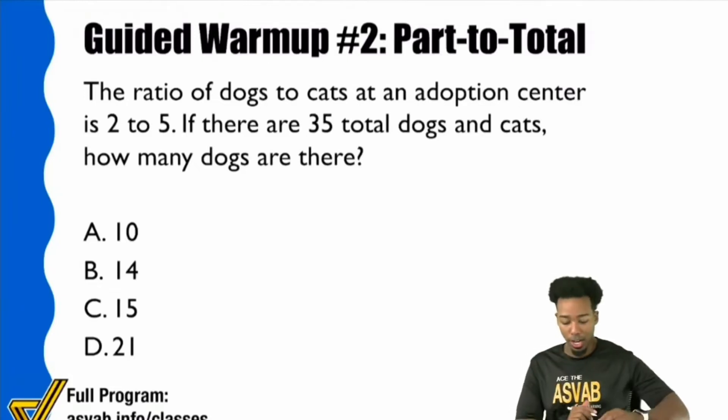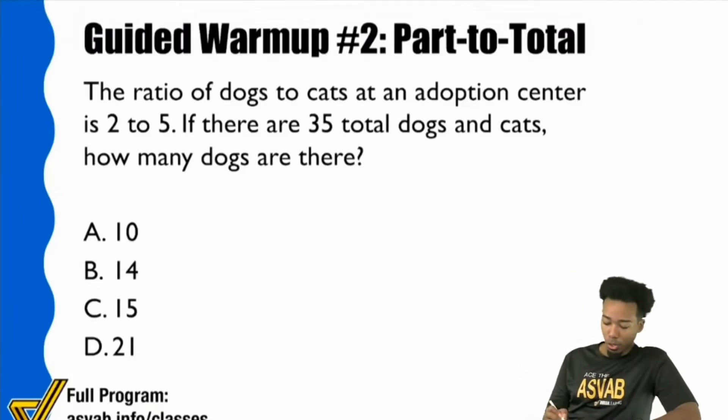Part to total. Let's check it out. No matter what, the first thing we're doing is reading the question sentence. Everybody start with the question sentence right here. It says, if there are 35 total dogs and cats, how many dogs are there?